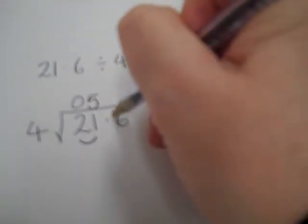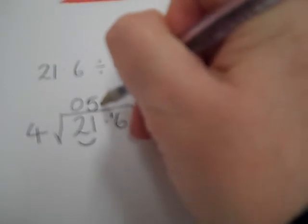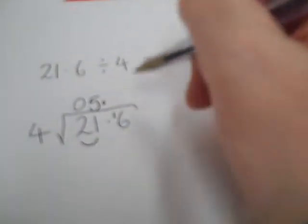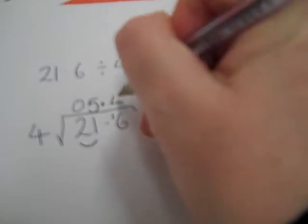So I'm going to give that 1 here, put in my decimal point. So we've now got 16. How many 4s are in 16? 4.